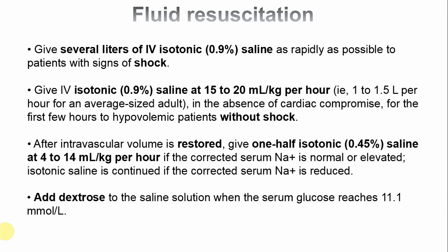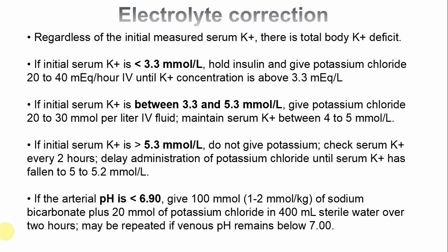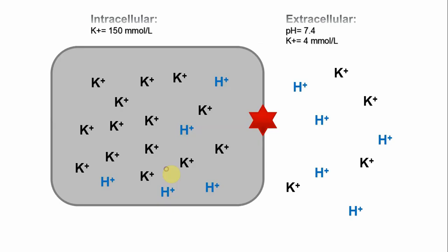Electrolyte correction — especially potassium — is a critically important topic with three scenarios. If potassium is below 3.3 mmol/L, give 20–40 mmol/hour of IV potassium first, then give insulin. Do not give insulin with potassium below 3.3 — the patient can develop severe dysrhythmia and die. If potassium is 3.3–5.3, give some potassium replacement and insulin simultaneously. If potassium is above 5.3 (as in our patient at 7.3), give insulin but no added potassium — just keep a close eye on potassium levels.